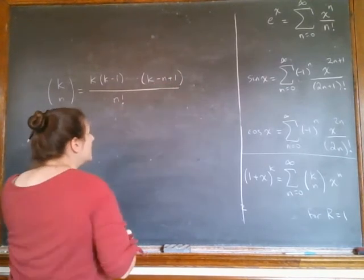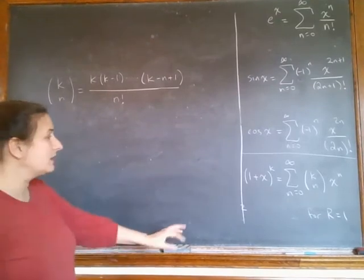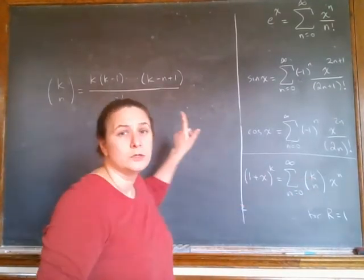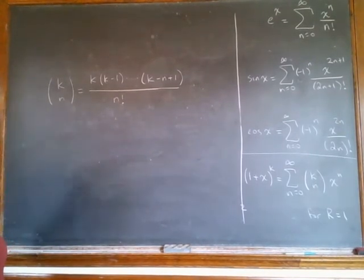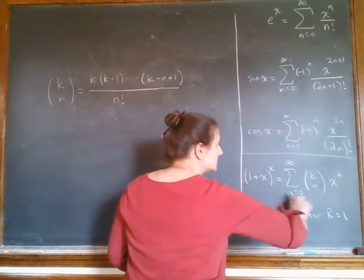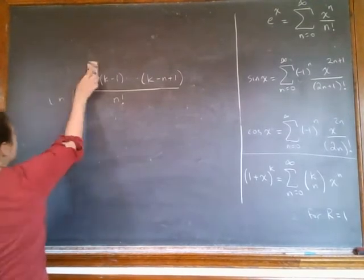This top part is going to be k, k minus 1, all the way down to k minus n plus 1. But you can just, if you are using this, you can just write k choose n and leave it like that. You don't have to write this out.